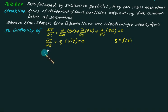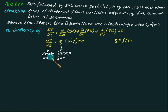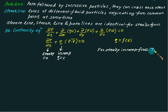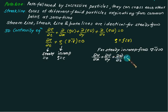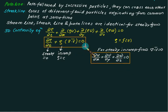If ∂ρ/∂t = 0, the flow is called steady flow. If ρ is constant with respect to space coordinates, it is incompressible flow — density is everywhere uniform. For steady incompressible flow, the continuity equation becomes ∇ · V̄ = 0, i.e., divergence is zero. This gives: ∂u/∂x + ∂v/∂y + ∂w/∂z = 0. If this equation is satisfied, the flow is possible in three dimensions — this is the generalized form of the continuity equation.